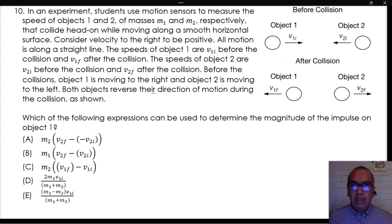In an experiment, students use motion sensors to measure the speed of objects 1 and 2 of masses m1 and m2 respectively that collide head-on while moving along a smooth horizontal surface.